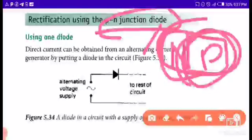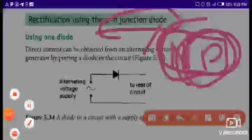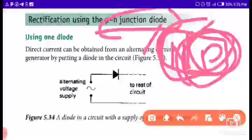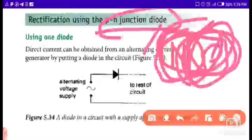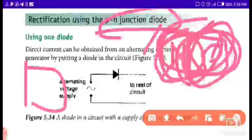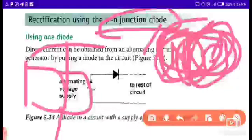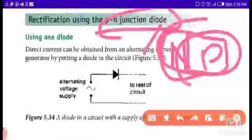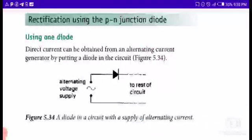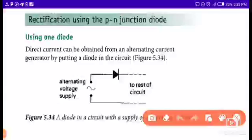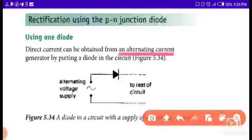There's a positive charge. The internet was positive, the internet was positive. The action. It's already going to rectify. Rectify my regular. You don't know the DC current can be obtained from an alternating current generator by putting a diode in the circuit.